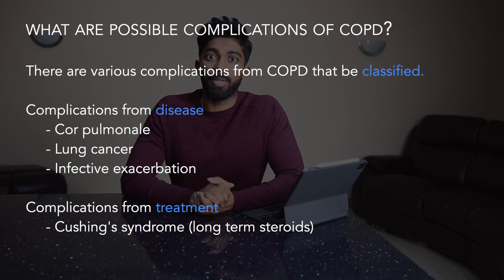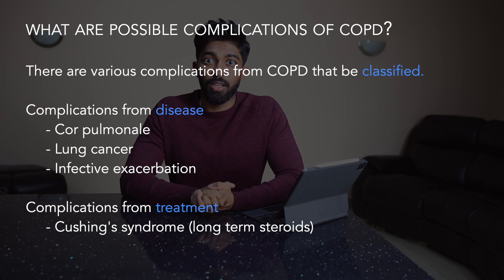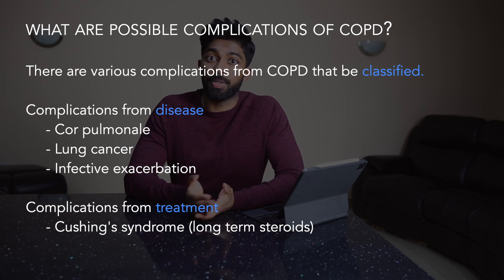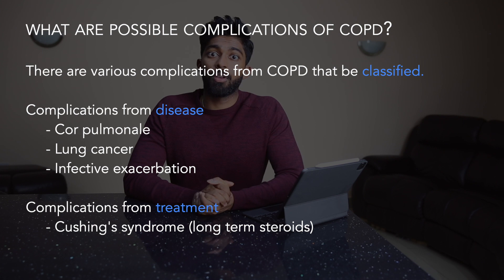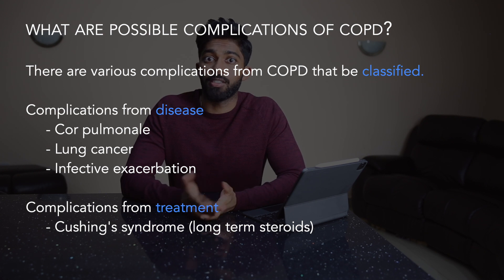You could then be asked about possible complications of COPD — always try to classify. There are various complications, which can be classified based on complications from the disease itself, such as cor pulmonale presenting with a raised JVP and a loud P2, lung cancer from persistent smoking, and infective exacerbations of COPD. You can also get complications from the treatment of COPD, such as long-term steroid treatment giving rise to Cushing's syndrome.